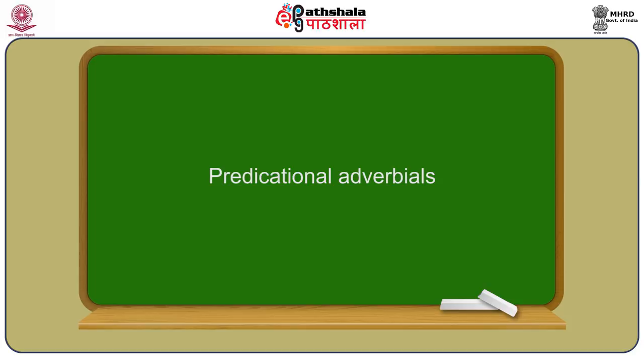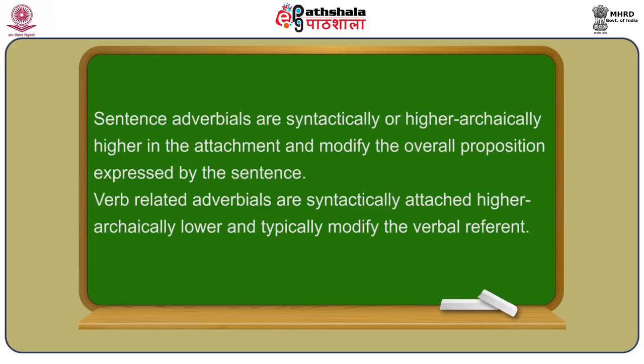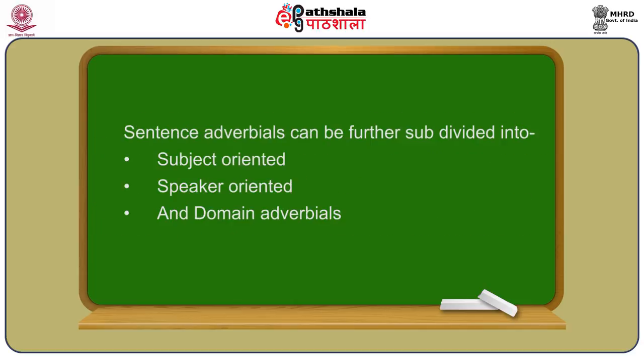Let's look first at predicational adverbials. These can be further subdivided semantically into sentence adverbials and verb-related adverbials — also sometimes called higher and lower adverbials. Sentence adverbials are hierarchically higher in the attachment and modify the overall proposition expressed by the sentence. Verb-related adverbials are hierarchically lower and typically modify the verbal referent. Sentence adverbials can be further subdivided into subject-oriented, speaker-oriented, and domain adverbials.